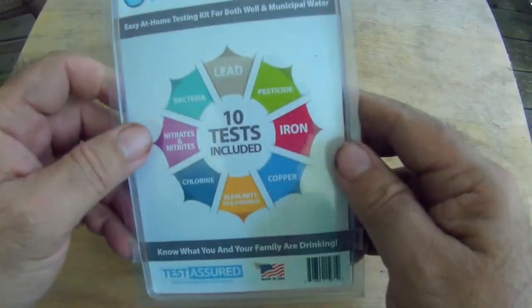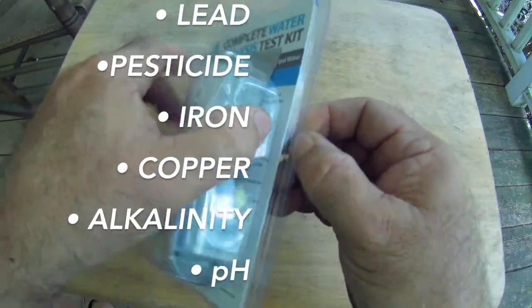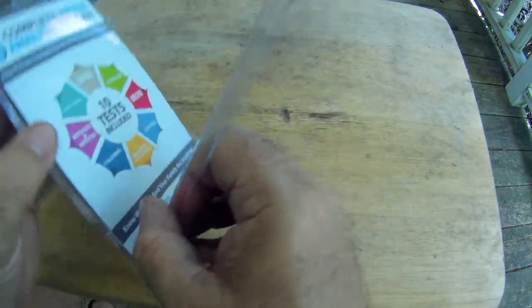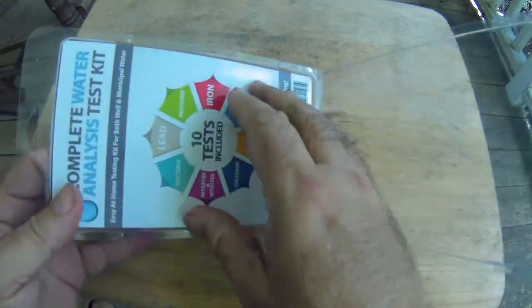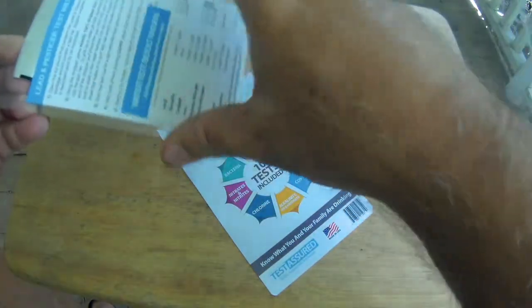The complete water analysis test kit from Test Assured lets you quickly and easily test your water supply for 10 of the most common contaminants found in drinking water. The clamshell box is pretty straightforward. I would suggest not opening it until you are ready to do your testing because there's a lot of tiny bits and pieces inside.